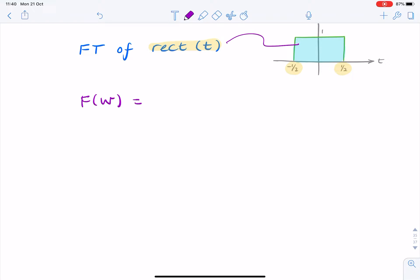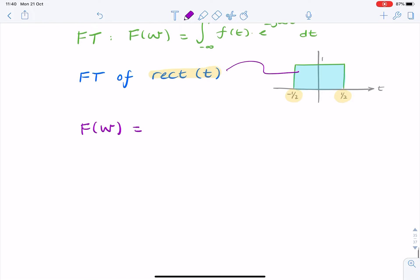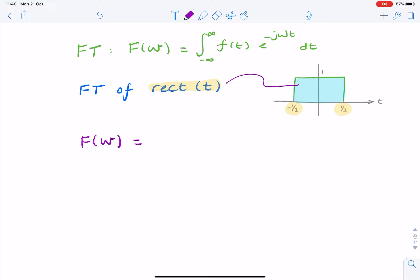To do that, to find that expression, we would need to carry out a Fourier transform integration. We would simply replace f of t here with its value, which happens to be one, and replace the limits of the integration, instead of minus infinity to infinity, from minus half to half.